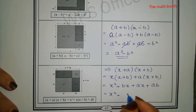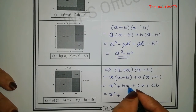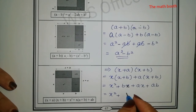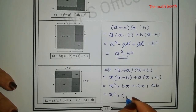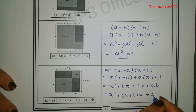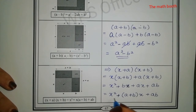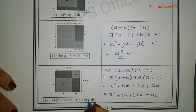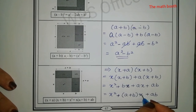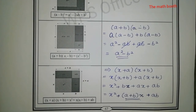So here x² — bx and ax have the same variable x, so I'll take x as common — giving (a + b)x, plus ab. So this is the formula we required: x² + (a + b)x + ab. This completes Learning Sheet 38.